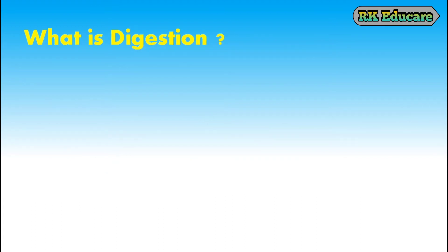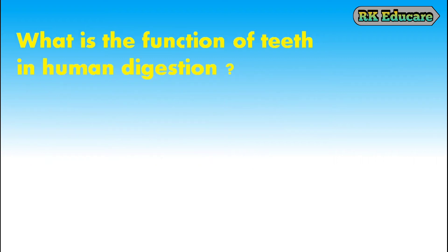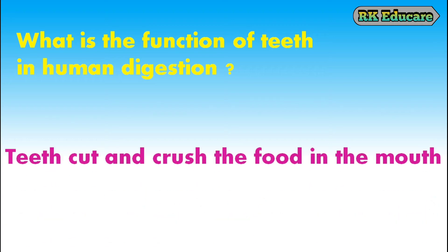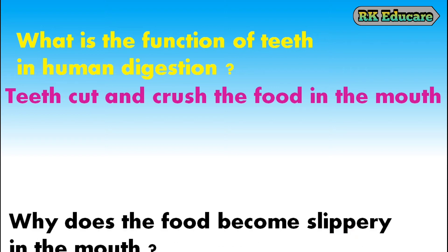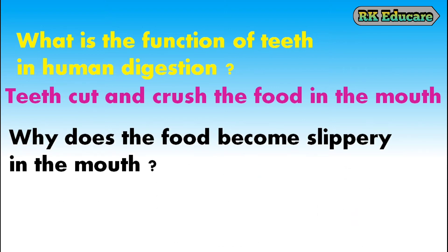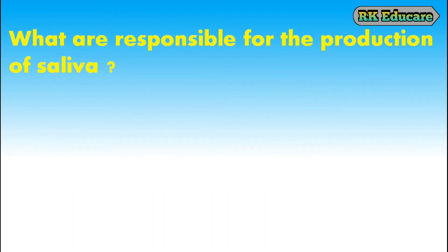What is digestion? Breaking down of complex food materials into simple substances with the help of enzymes and absorbed into the body is called digestion. What is the function of teeth in human digestion? Teeth cut and crush the food in the mouth. Why does food become slippery in the mouth? Food becomes slippery in the mouth because of the addition of saliva. What are responsible for the production of saliva? Salivary glands are responsible for the production of saliva.